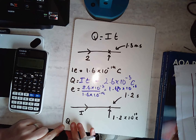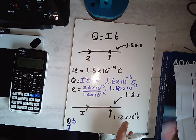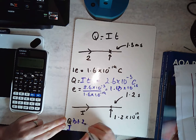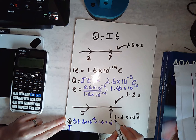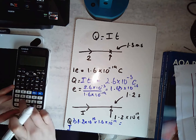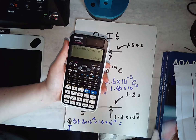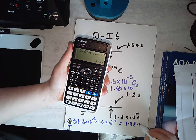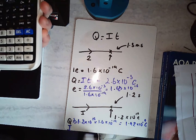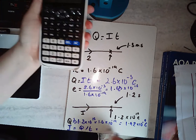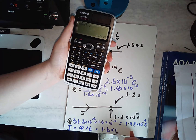For this one it's a little bit different. I want to know the total charge. I know this is how many electrons are passing, and one electron has this charge. So I do 1.2 times 10 to the 10 times 1.6 times 10 to the minus 19, giving a total charge of 1.92 times 10 to the minus 9 coulombs passing that point. Then current I = Q divided by time, so 1.92 times 10 to the minus 9 divided by 1.2, giving a current of 1.6 times 10 to the minus 9 amps.